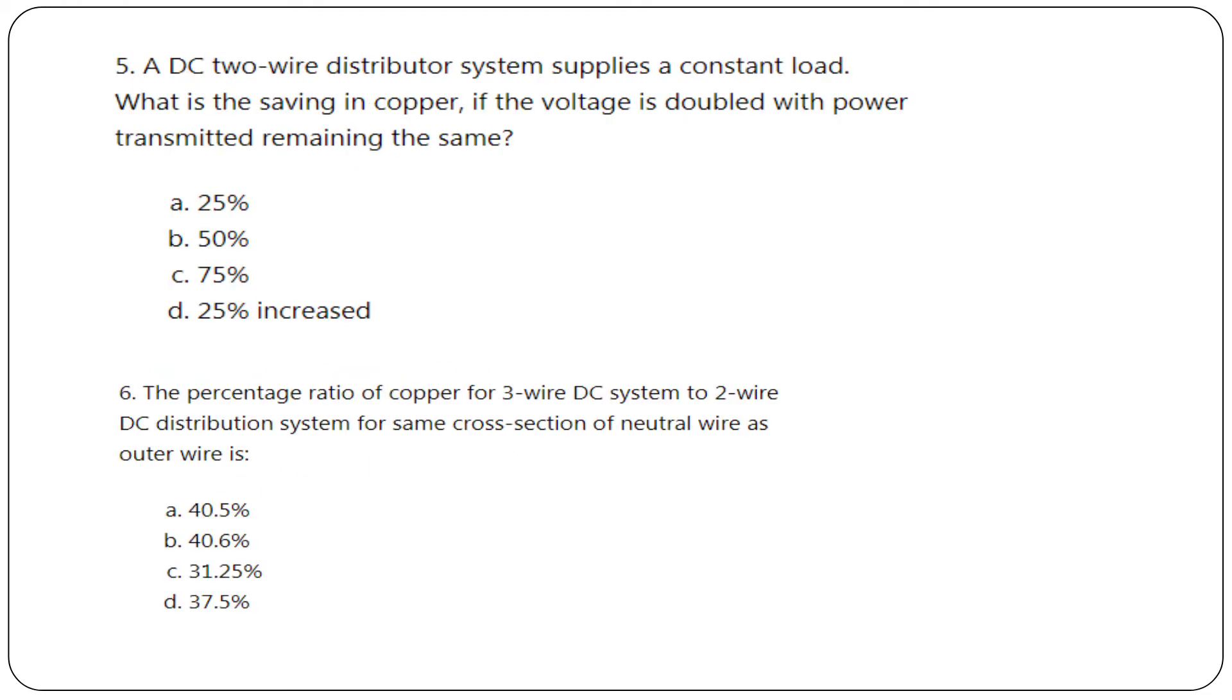Fifth question: A DC two-wire distributor system supplies a constant load. What is the saving in copper if the voltage is doubled with power transmitted remaining the same? Sixth question: The percentage ratio of copper for three-wire DC system to two-wire DC distributor system for same cross-sectional area of neutral wire as outer wire is 40.5, 40.6, 31.25, or 37.5. It is option C, 31.25%.